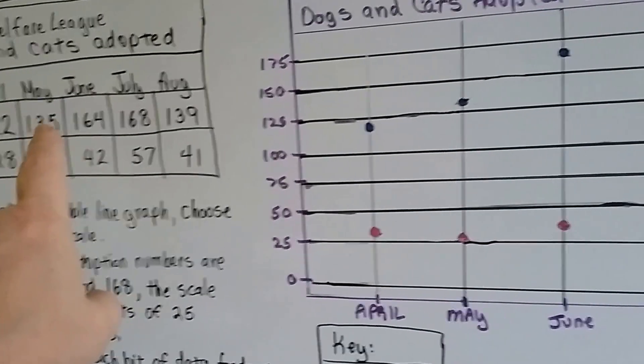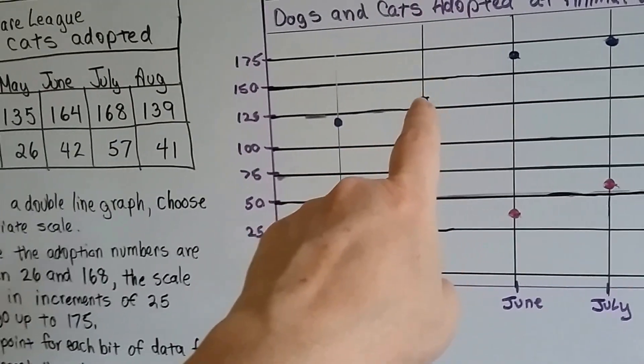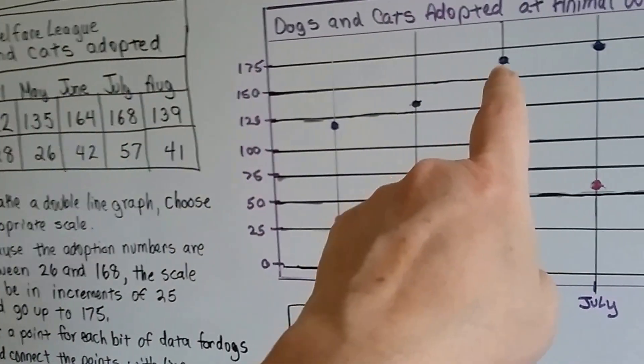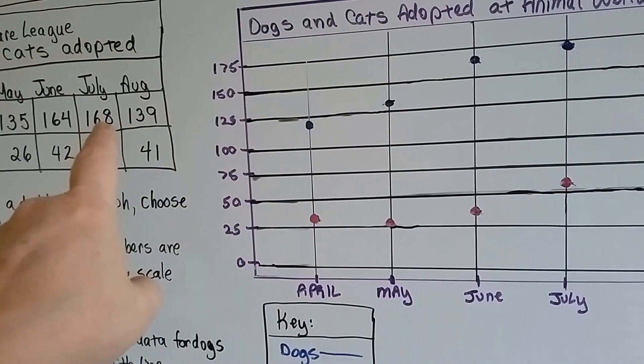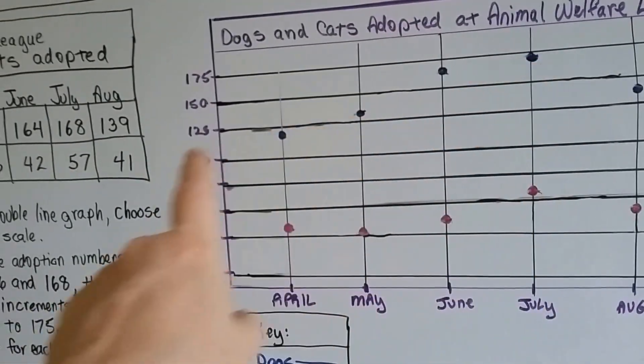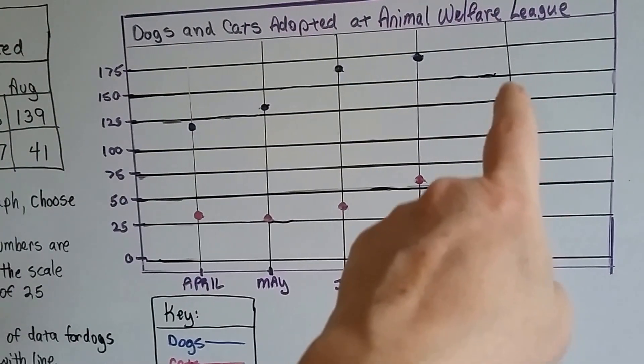For May it's 135 for the dogs, so we put one above 125 but below 150. For June it was 164, so we put it above 150. July was 168, so we put it just below 175. And August was 139, so we put it between 125 and 150.